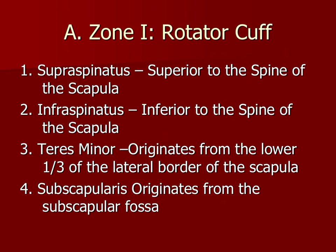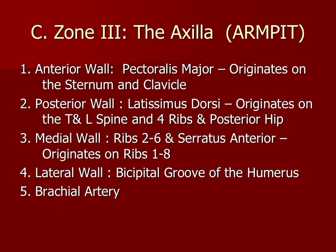Anterior zone: the rotator cuff has four primary muscles — supraspinatus, infraspinatus, teres minor, and subscapularis. These four muscles are pivotal in any sport where the arm is utilized. The axilla, also known as the armpit, and all surrounding soft tissue structures are things you must be able to identify.